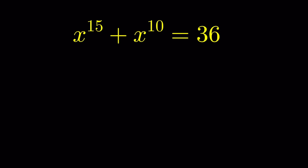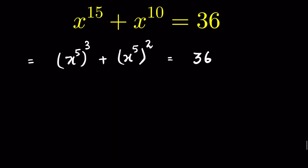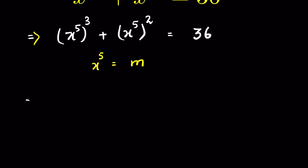x raised to the power 15 plus x raised to the power 10 is equal to 36 — find the value of x. We can write x^15 as (x^5) whole raised to the power 3, plus x^10 as (x^5) whole raised to the power 2, equal to 36. Now let's consider x raised to the power 5 as m, so this becomes m cubed plus m squared equal to 36.